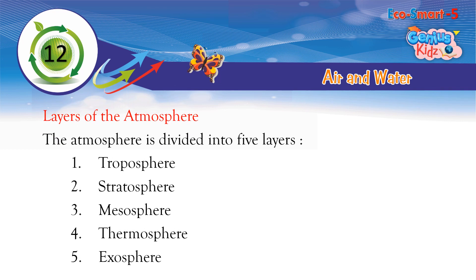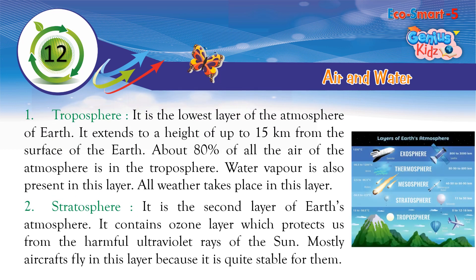Layers of the Atmosphere: The atmosphere is divided into five layers — Troposphere, Stratosphere, Mesosphere, Thermosphere, and Exosphere. The Troposphere is the lowest layer of the atmosphere of earth. It extends to a height of up to 15 kilometers from the surface of the earth. About 80% of all the air of the atmosphere is in the Troposphere. Water vapor is also present in this layer, and all weather takes place here.